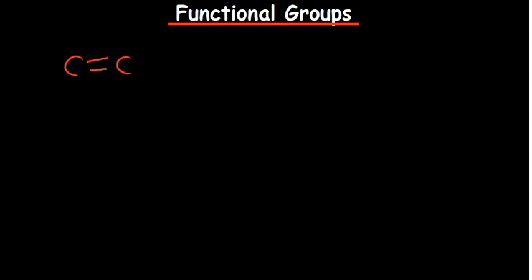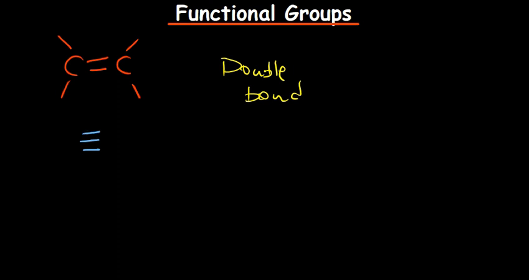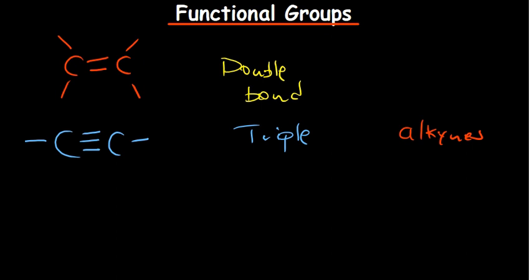When you see a double bond between carbon atoms, this occurs in alkenes. So a double bond has effects on the chemical properties of alkenes — the class of compounds is called alkenes. And when you have a triple bond, the class of compounds is called alkynes.